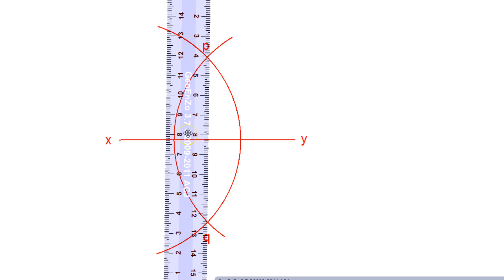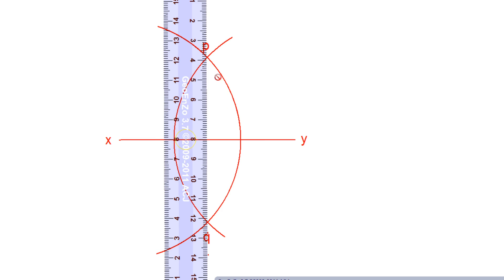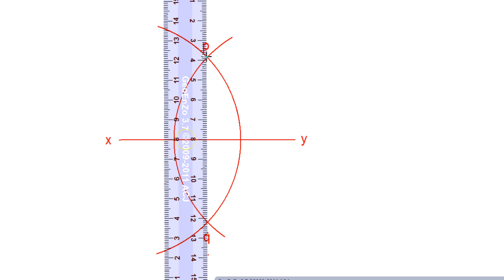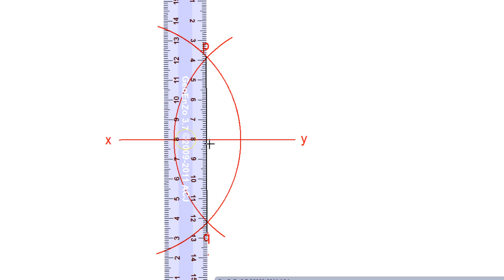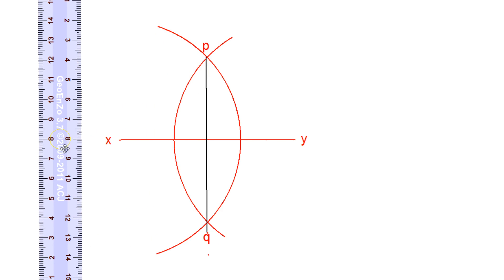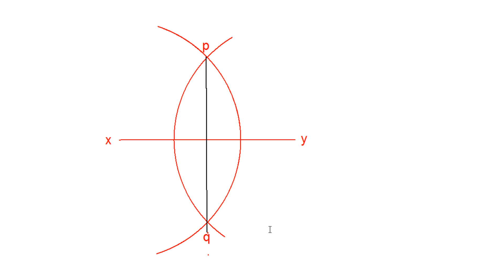I have connected the line using the scale. Now I'll take a different color — black — and connect them. This connector line PQ divides line XY into two equal parts. The intersection point is named O.